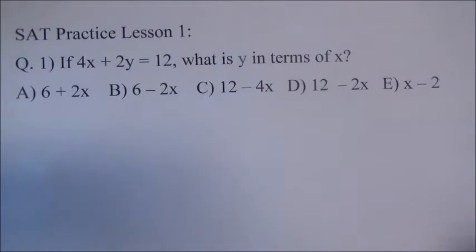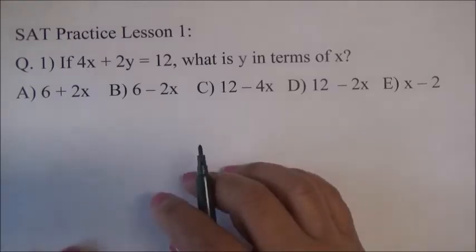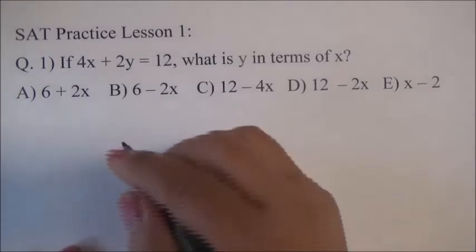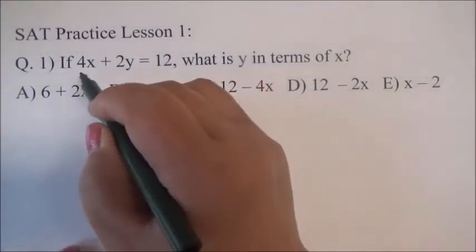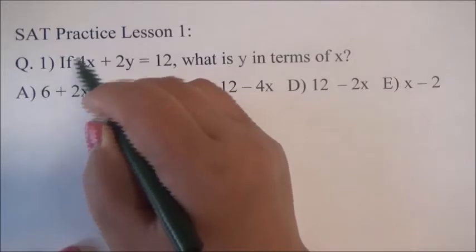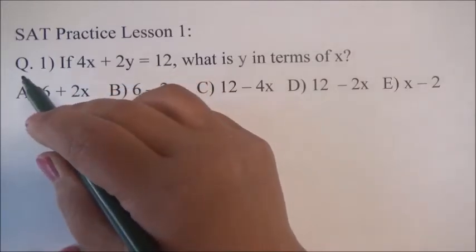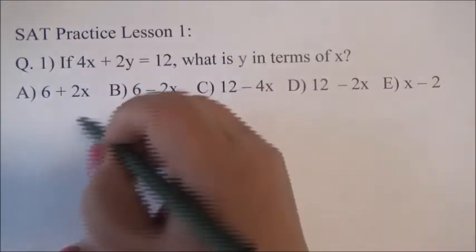Okay, so now we have SAT Practice Lesson 1 and question number 1. If 4X plus 2Y is equal to 12, what is Y in terms of X? So, there are two variables, X and Y, but we want to make Y by itself. So, we have to move 4X from the left side to the right side.